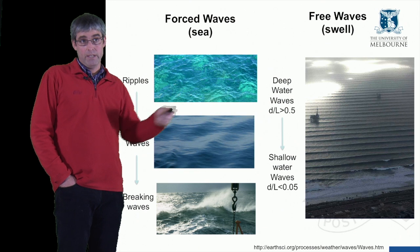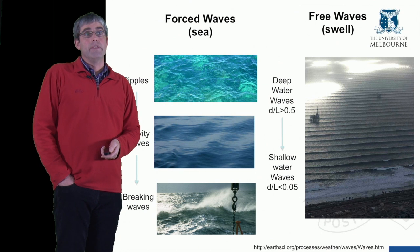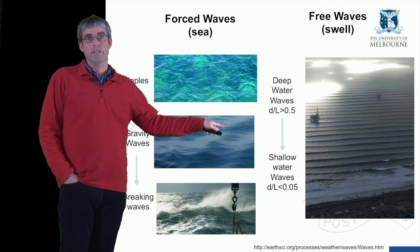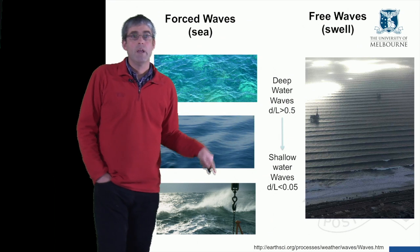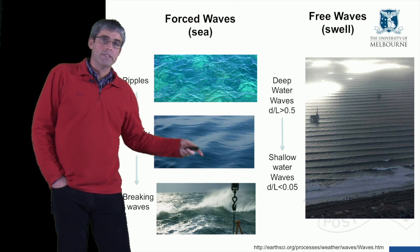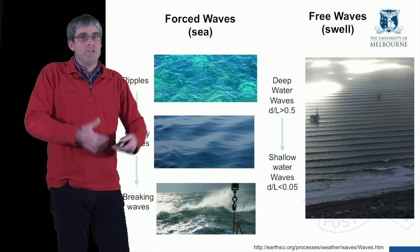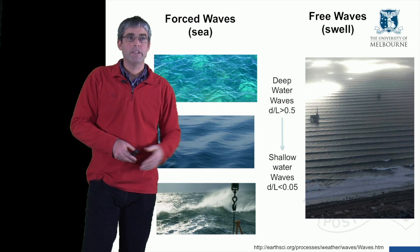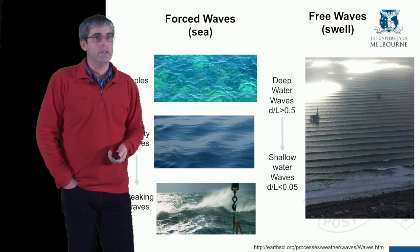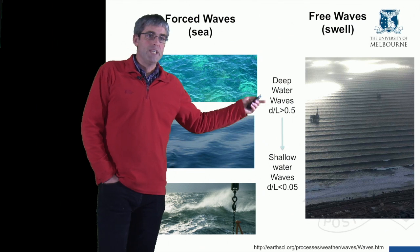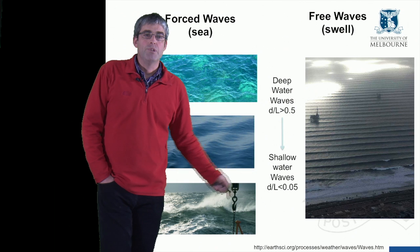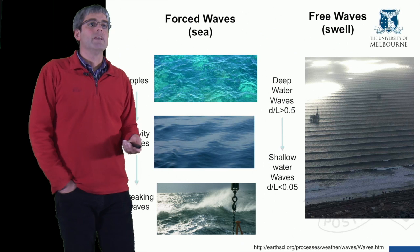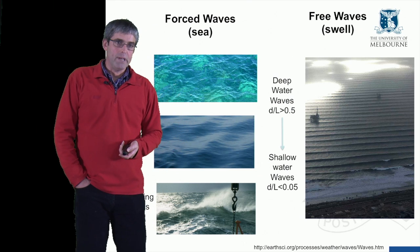These swell waves tend to have fairly regular wavelengths. When they're first formed, there's a high level of irregularity. After the wind dies, the waves sort themselves out — those travelling with higher celerity travel ahead of those with lower celerity, and eventually you get a regular periodicity. As these deep water waves move into shallow water — defined as areas where depth is less than one-twentieth of the wavelength — they begin to be transformed in various ways.